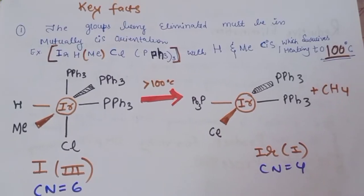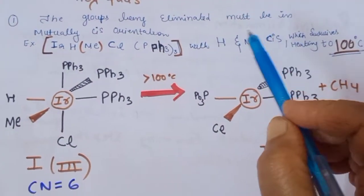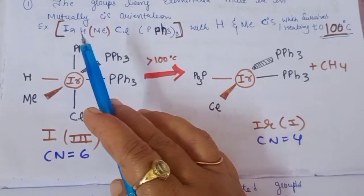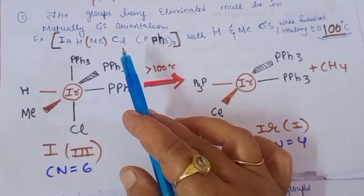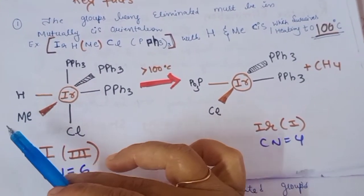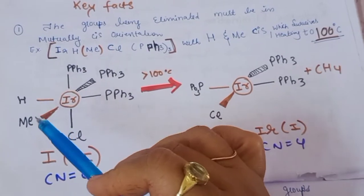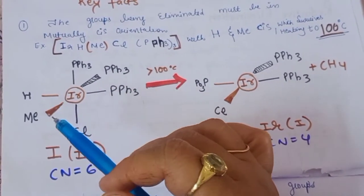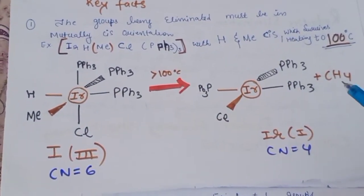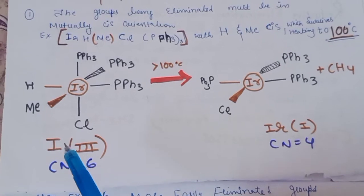An important condition for reductive elimination: the group being eliminated must be in a mutual cis orientation. For example, consider a complex where the ligands are hydrogen, methyl group, chlorine, and triphenylphosphine. The hydrogen and methyl group are in the cis position, so they satisfy the condition. These two anionic ligands in the cis orientation are removed — methyl plus hydrogen — forming methane, which is eliminated.